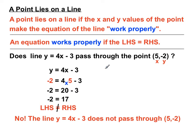If we get something along the lines of 5 equals 5, or minus 2 equals minus 2, or 7 equals 7, we can conclude, yes, the point lies on the line, or, yes, the line passes through the point.